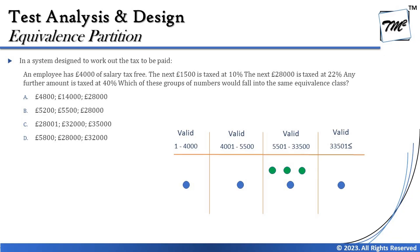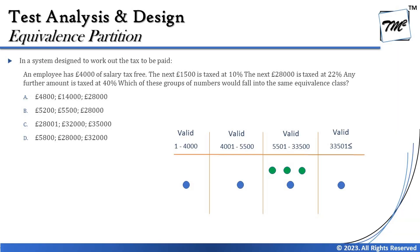Continuing with a more complex advanced-level question to ensure you're well prepared. The question reads: in a system designed to work out the tax to be paid — the subject can be anything, just concentrate on the data — an employee has 4,000 of salary tax-free. Note that salary cannot be negative, unlike integers. Age, experience, and salary are subjects with no negative values, so the minimum value for salary is zero.